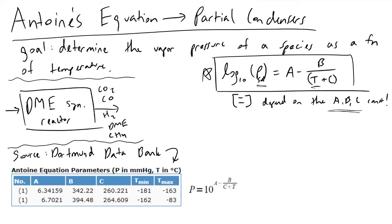Here I took a screenshot of what you would find on their website — this is for methane, CH4, at 300 Kelvin. They provide A, B, and C as well as the temperature range for which these parameters are valid. They also have other constants valid for different temperature ranges.